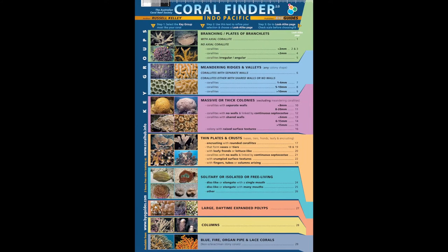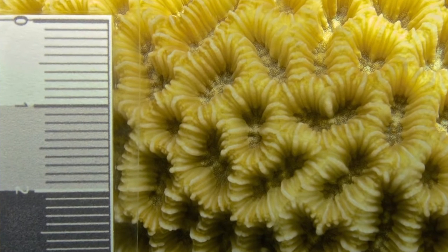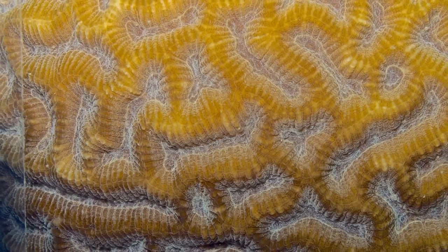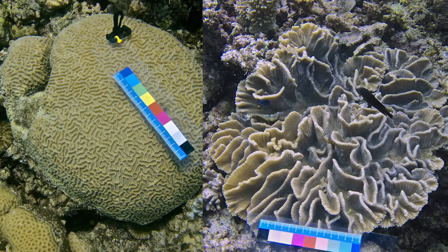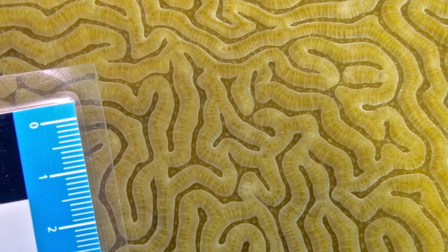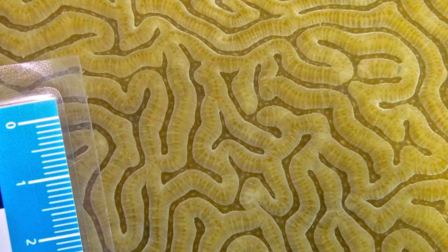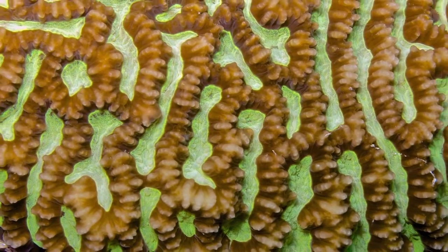The alternative to separate walls in the Coral Finder's meandering key group logic is shared or indistinct walls. Meandering corals with shared walls can have valley lengths that vary from short through medium to long and convoluted. Similarly, the valleys can be narrow or wide. The surface texture of the coralites that form meandering valleys can also vary dramatically — from simple through complex and even chaotic.